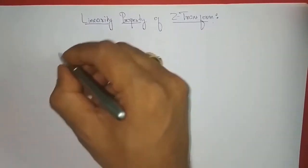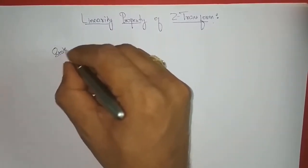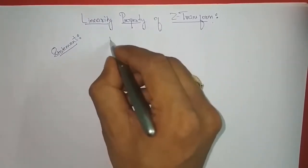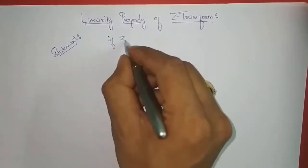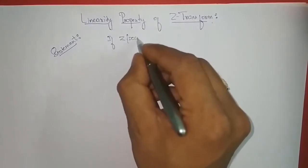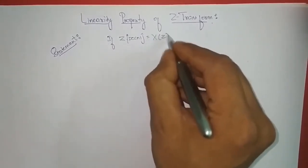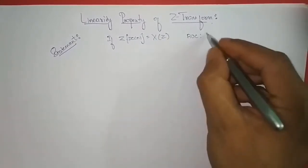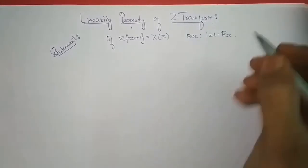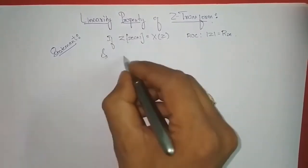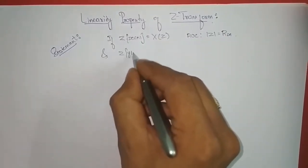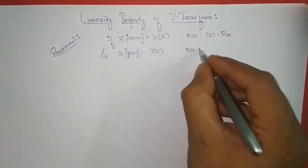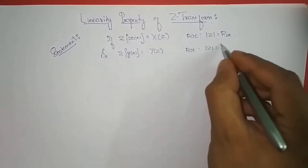The statement is something like this: if the Z-transform of x(n) is equal to X(z) with ROC magnitude of z equal to rx, and the Z-transform of y(n) is equal to Y(z) with ROC magnitude of z equal to ry,